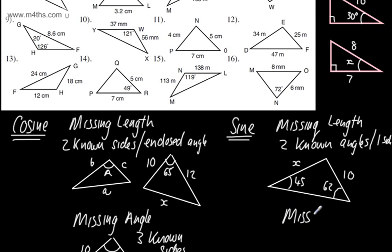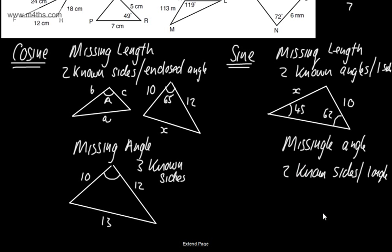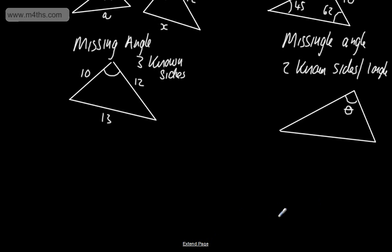If we want a missing angle using the sine rule, we need two known sides and one angle. For example, if I wanted to find angle theta, and I had a side of 10, a known angle of 40 degrees, and another side of 7, we could go ahead and find that missing angle. This is what we call a non-enclosed angle scenario, so we use the sine rule.